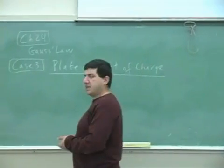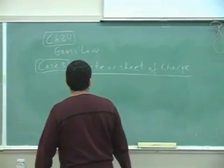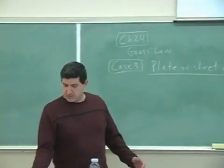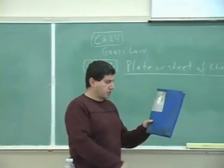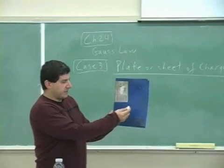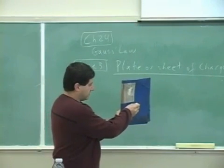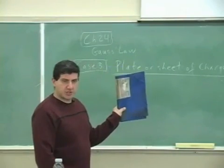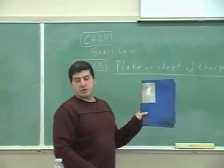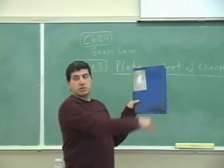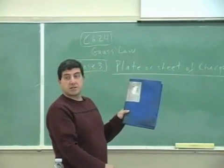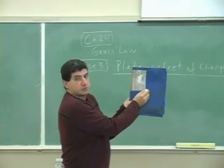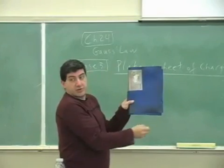Now the last case that's left is what's known as a plate or sheet of charge — pretty much just a sheet of charge. We want to find the electric field close to it, in the vicinity near that sheet of charge. That sheet of charge can be rectangular or circular. Its shape doesn't matter since we want to know the electric field right close to the surface, so we don't really care about the shape.